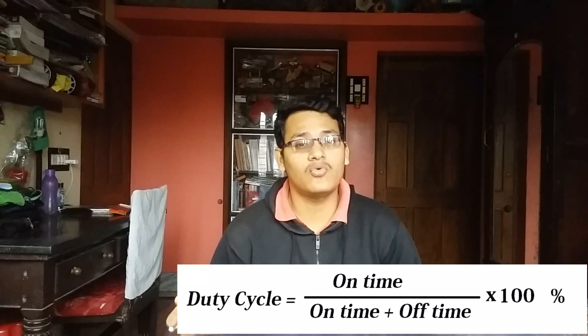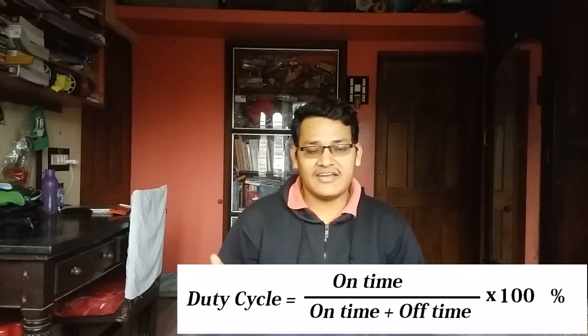So in our 50% duty cycle we can get the voltage to 2.5 volts, and similarly in a 25% duty cycle we can get 1.25 volts. By using this PWM signal we can get any analog value for our gate voltage.